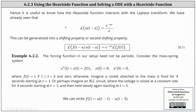It's important to know how the Heaviside function interacts with the Laplace transform. We've already seen that the Laplace transform of u(t − a) equals e^(−as) / s. This can be generalized into the second shifting property, which states the Laplace transform of f(t − a) · u(t − a) equals e^(−as) times the Laplace transform of f(t).